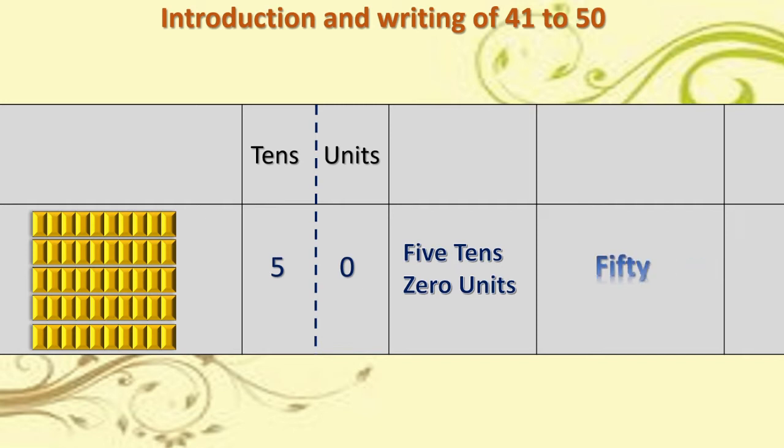Same thing we will write in words: five tens and zero units. That makes fifty. See the spelling: F-I-F-T-Y, fifty. See how we write it in numerals — fifty. I hope you understood about how to write numbers from forty-one to fifty.